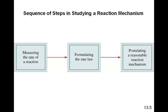The sequence of steps in studying a reaction mechanism: first you measure the rate of the reaction, then you formulate the rate law, and then you postulate the mechanism. We're going to work backwards — we're going to take a mechanism and postulate the rate law.